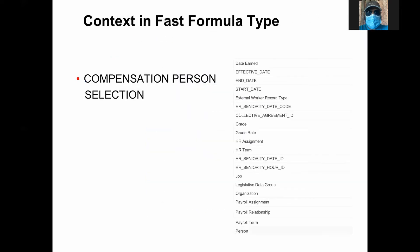Now we'll look at the contexts supported by compensation person selection. These are the contexts supported: date which is set, effective date, start date, end date, external worker record type, HR seniority date code, collective agreement ID, grade, grade rate, HR assignment ID, HR time ID, seniority date ID, seniority hour ID, job ID, legislative LDG, organization ID, payroll assignment, payroll relationship, payroll time, and person ID.